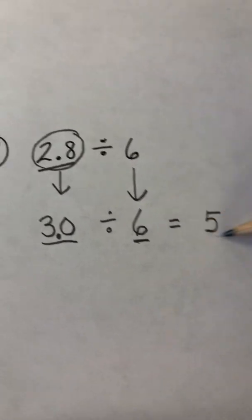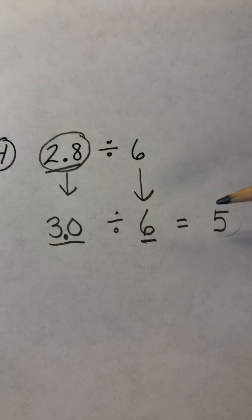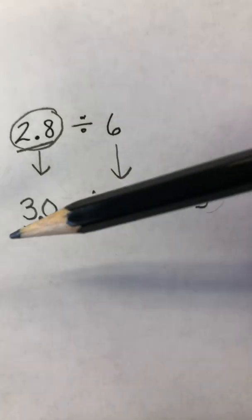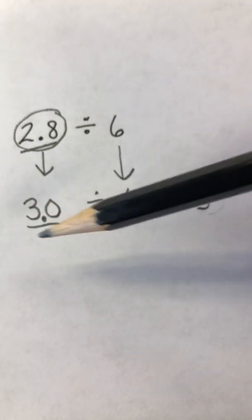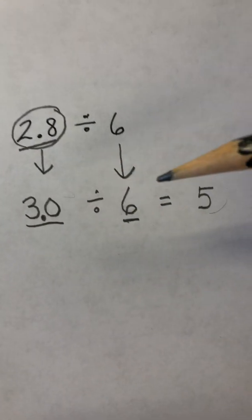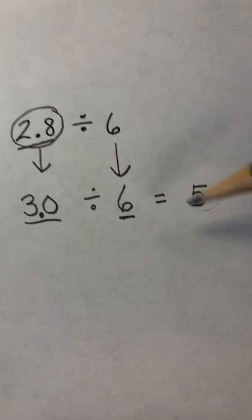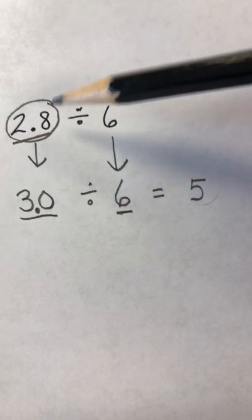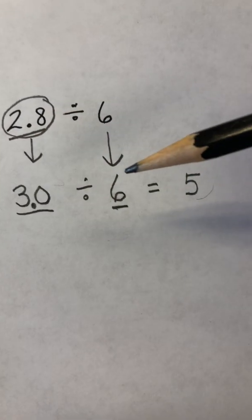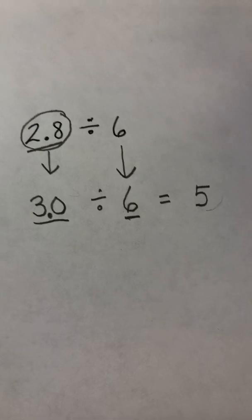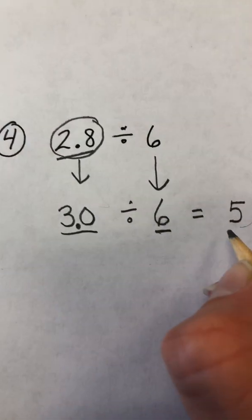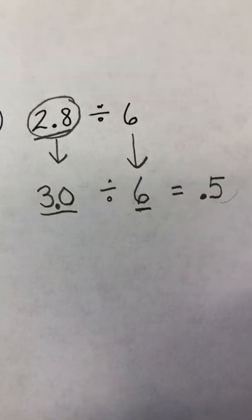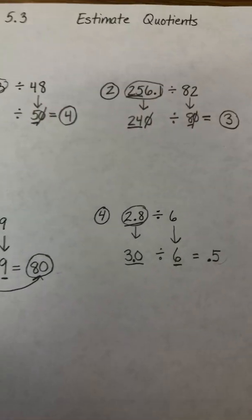But if you leave your answer as the whole number 5, it would be incorrect because 5 times 6 is 30, not 3. And this is actually a 3. So what you need to remember is that this needs to be less than a whole number. So 2 and 8 tenths divided by 6 is actually close to 5 tenths. So you have to bring the decimal back into your answer. And that's it. I hope this was helpful. Thank you.